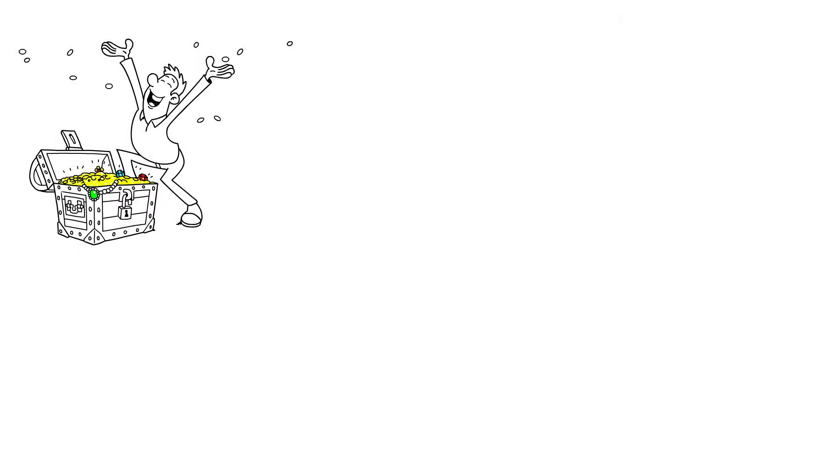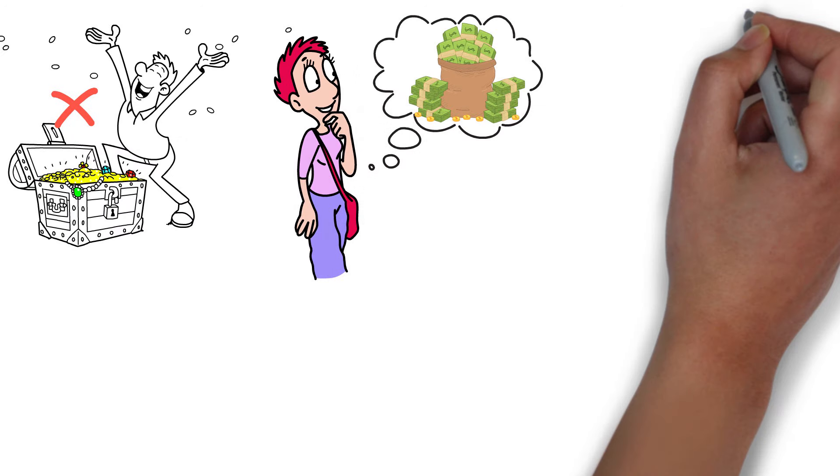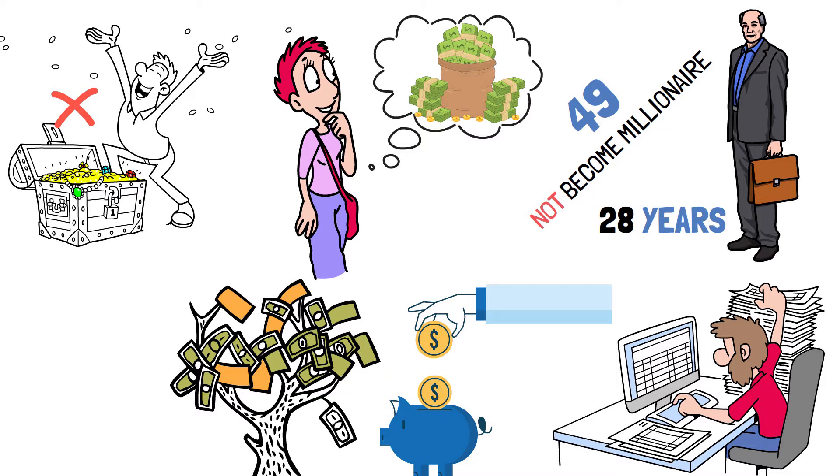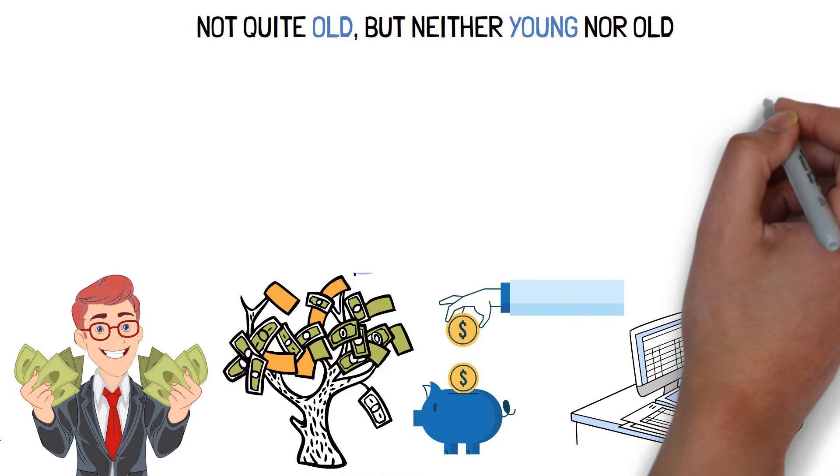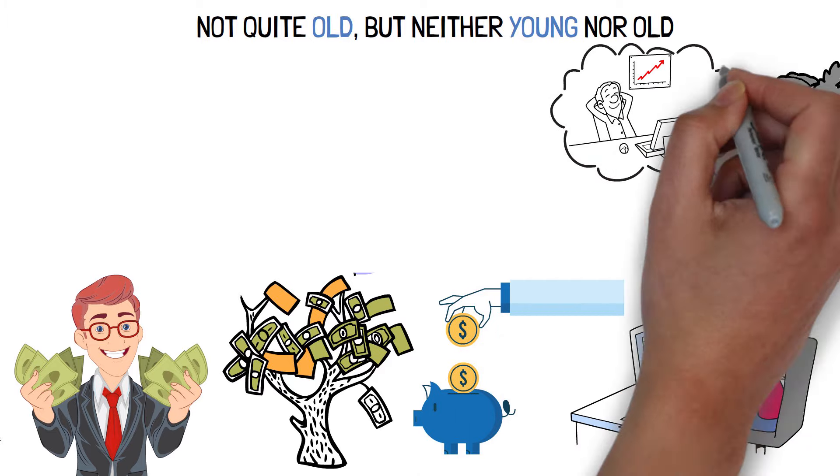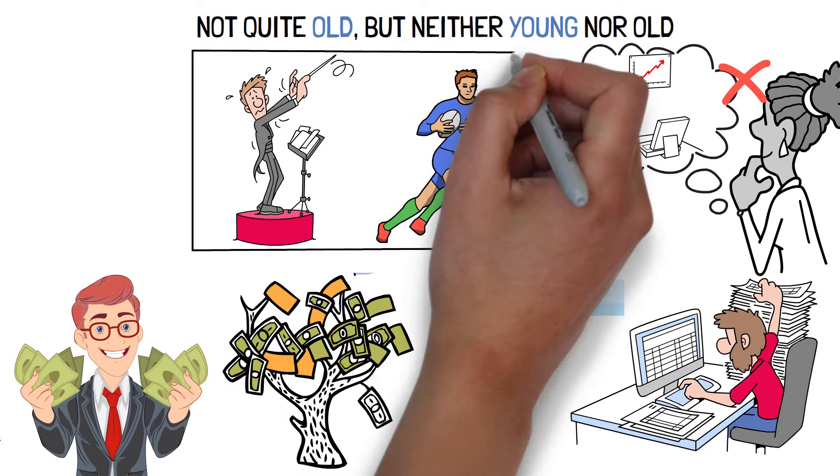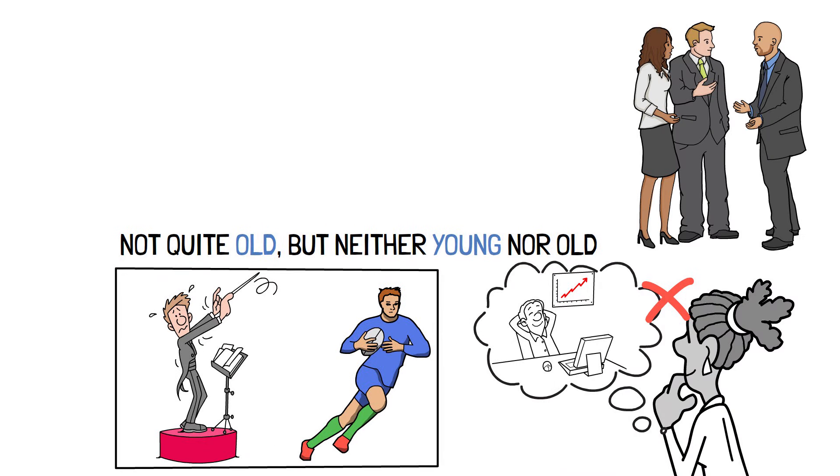Most millionaires did not get wealthy overnight. As appealing as it may sound to become a billionaire soon, the average millionaire did not become one until the age of 49, and they spent 28 years working, saving, and investing before becoming a millionaire. Not quite old, but neither young nor old. The notion that most successful people are on a fast pathway to fortune is a misconception. Some of them became wealthy by participating in professional sports or becoming musicians. Although these are few and far between, three out of every four millionaires stated that their success is due to steady, long-term investing.